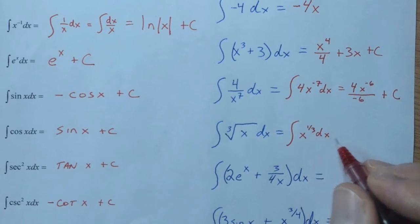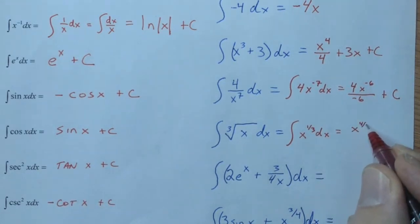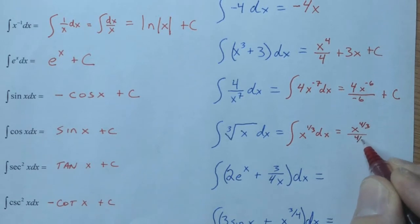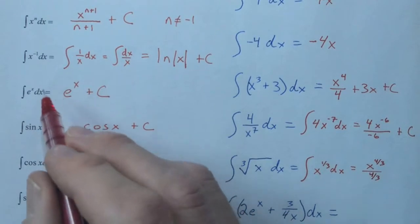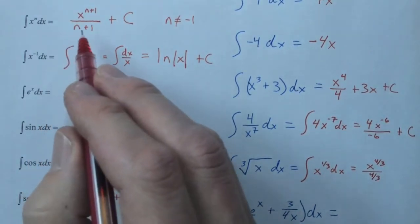Again, it's okay that it's a fraction. We're going to add 1 to it. All right, so this becomes x to the 4 3rds. And we're going to divide by 4 3rds. But it's still good. We're still using our reverse power rule right there.